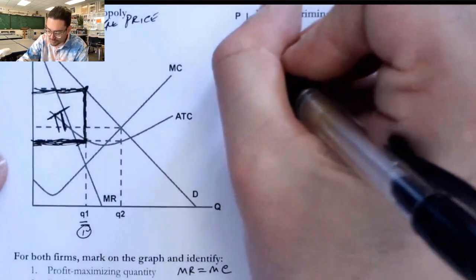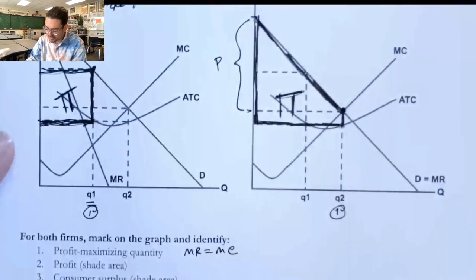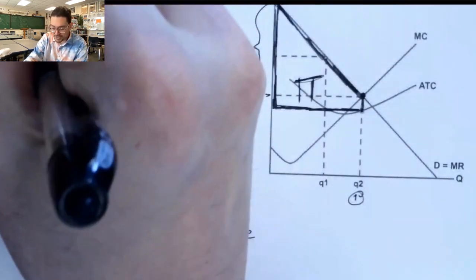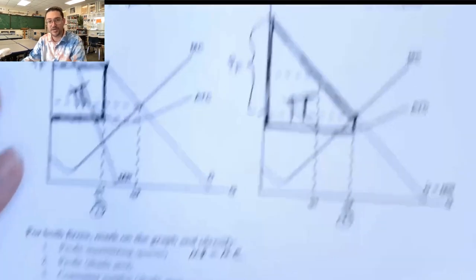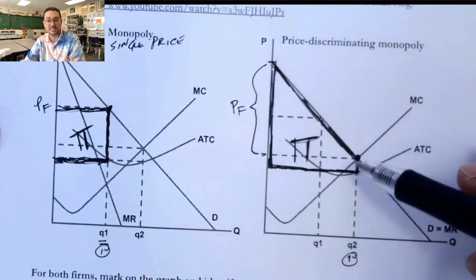And that's because the actual prices that are getting charged are in this range. So the firm's prices are not just one price. It's a whole range of prices that the firm is charging because they're charging every single consumer different prices.